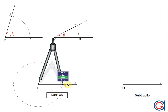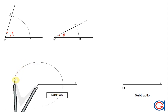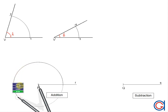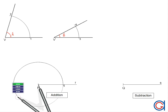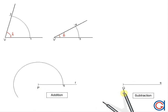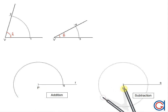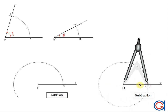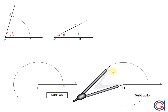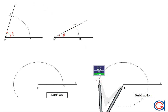Now with the same radius, centering the compass on P of the horizontal ray R, we scribe a semicircle until it cuts it at a point that we will call 5 as can be seen here. Then with the same radius, centering the compass on Q of the horizontal ray S, we scribe a semicircle until it cuts it at a point that we will call 6 as shown here. So we now have two new points on our two rays: point 5 and point 6.